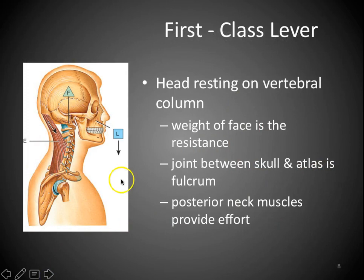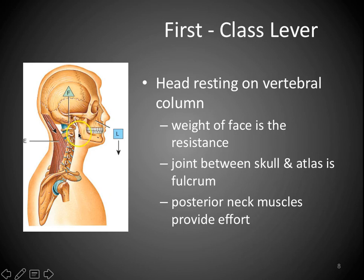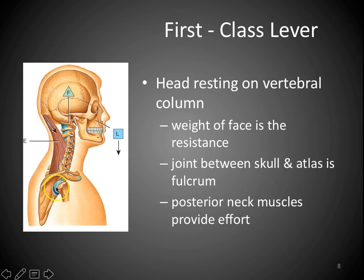Let's look at a first-class lever in the body. The fulcrum is the joint between the occipital condyles and the atlas — that's where our head tips forward or backward. The weight is the weight of our face. You know when you fall asleep and your head bobs forward? The effort is provided by the neck muscles in the back of your head keeping your face and head upright. That's a first-class lever.